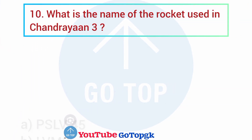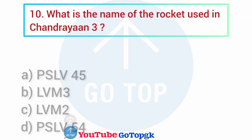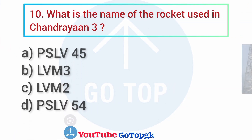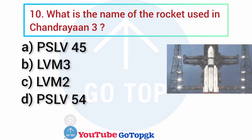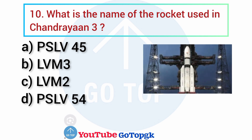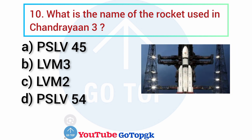Question No. 10. What is the name of the rocket used in Chandrayaan-3? Options: A. PSLV-45, B. LVM-3, C. LVM-2, D. PSLV-5. Your correct answer is option B: LVM-3.